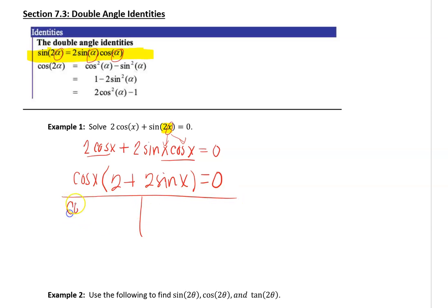So I'm going to say, okay, well, cosine x, where is it equal to zero? And 2 plus 2 sine x, where is it equal to zero? So that gives me 2 sine x equal to negative 2, divide by 2. So I'm looking at sine x equal to negative 1.